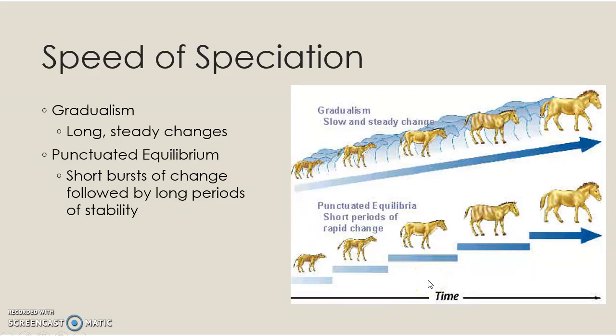There are many people who argue for punctuated equilibrium, and many who argue for gradualism, but you need to understand the difference and that both are pretty viable options. That is the end of the PowerPoint originally posted in Blackboard, but there is still a smaller activity to follow as the fourth installment, which goes along with the worksheet posted in Blackboard. So move on to that now.